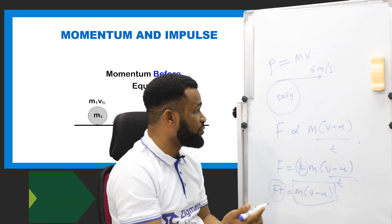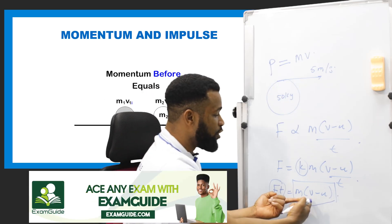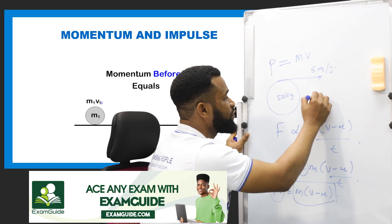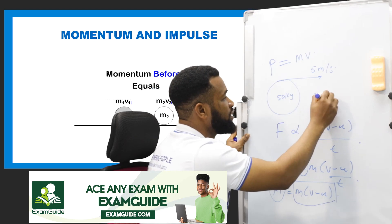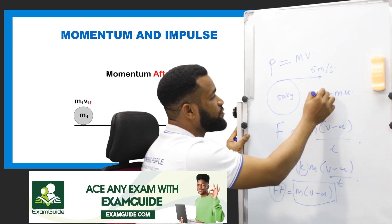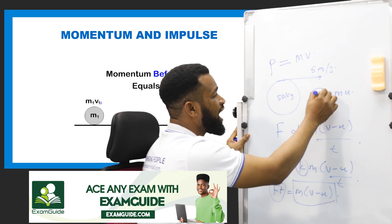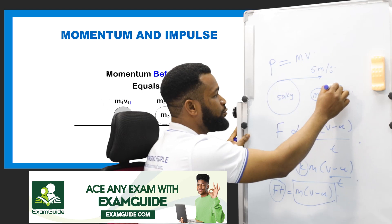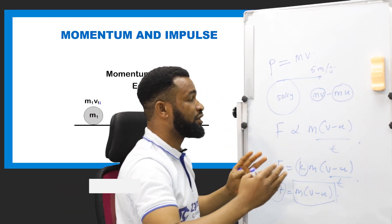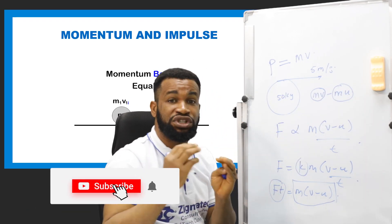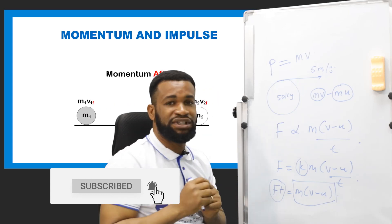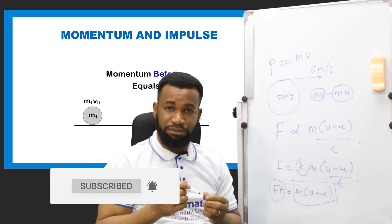What do I mean by change in momentum? If I open the bracket, I'm going to have mv minus mu — that means momentum after and momentum before. If you subtract the two of them, you have what is called change in momentum, and that is the same thing as impulse.